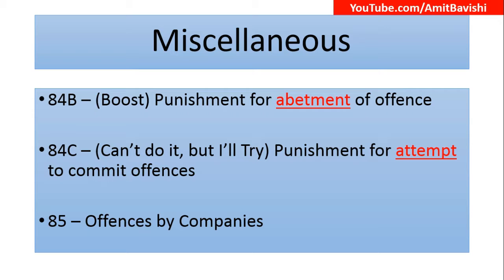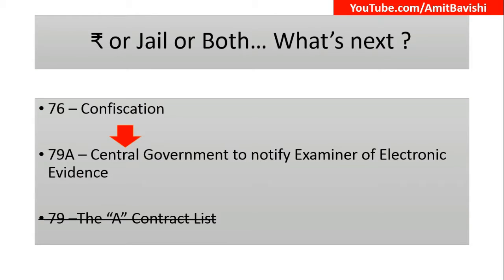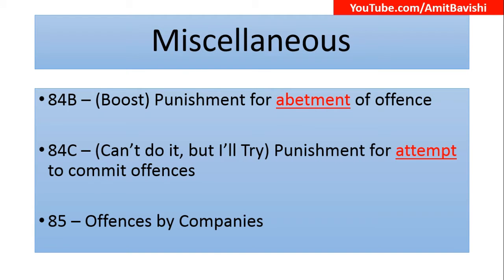Section 85 covers offenses by companies — who is going to be liable when a company commits an offense? Quick recap: Section 76 is Confiscation. The confiscated goods are checked by an examiner notified by the Central Government through Section 79A. Section 84B — B for boost — means abatement of offense. Section 84C — 'can't do it but I will try' — means attempt to commit the offense. And finally, Section 85 covers offenses by companies.